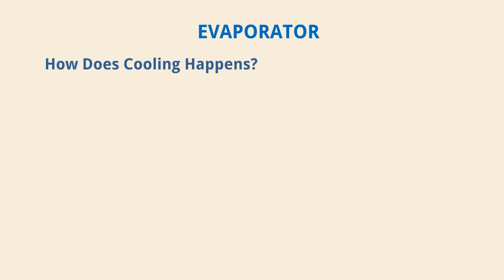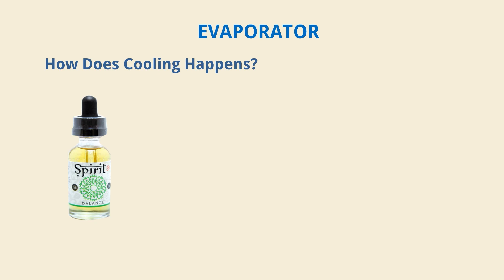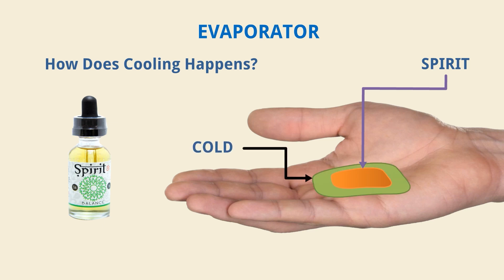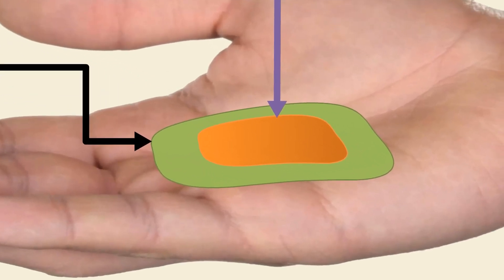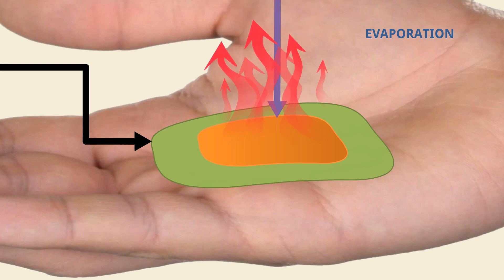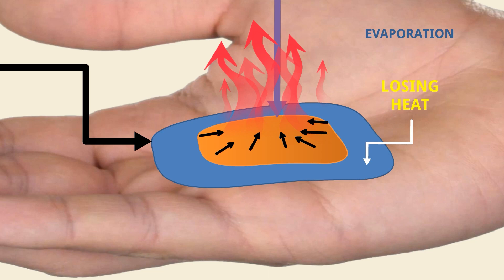To understand, let us take an example. This is spirit. Spirit has a special property of evaporation at normal pressure and temperature — it starts to evaporate. Now, if you take some drops of spirit on your palm, after a couple of seconds you will see your palm gets cold. How does this happen? The spirit takes the latent heat of vaporization from your palm, and gradually the palm loses heat — losing heat means the temperature goes down and the palm gets cold.